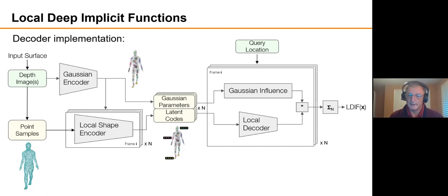Anyway, so there's a multiplication here. And then all the local functions produced this way are summed to produce the overall implicit function.